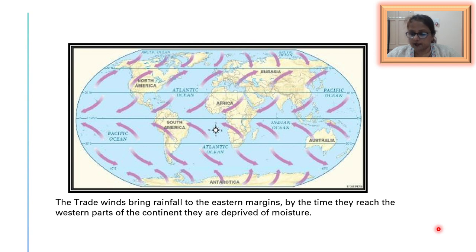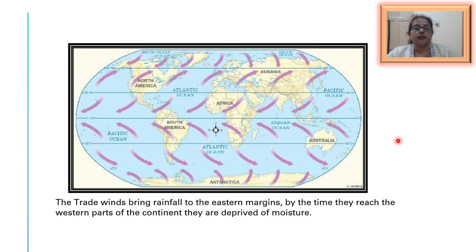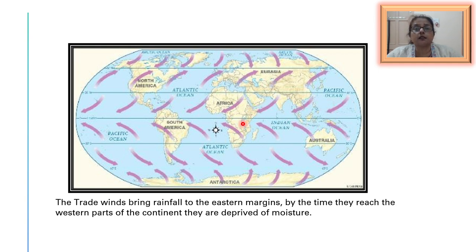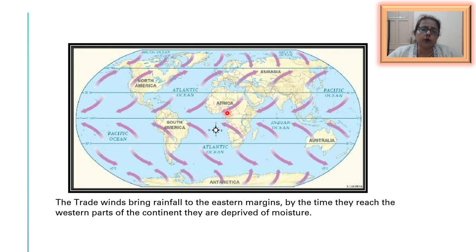Now, why are tropical deserts confined to the western margins of the continents? If we look at the trade winds — the northeast trades and the southeast trades — though they blow over vast expanses of water and are highly moisture-laden, they mostly drop their moisture in the eastern margins of the continents. As a result, by the time they reach the western margins, they are almost deprived of moisture. That is why most deserts are found in the western margins of the continents.